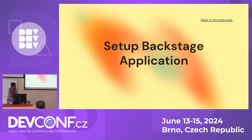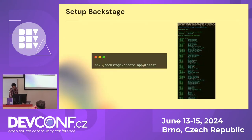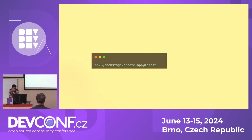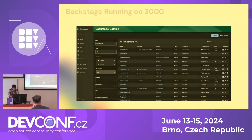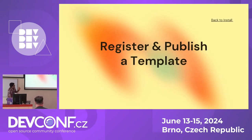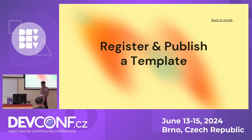To set up a Backstage application, it's very easy. You go to your terminal and run 'npm create @backstage/app@latest' and it will run the Backstage framework on your system. Now let's create a template in Backstage — that's today's demo. We'll create a template and publish it.